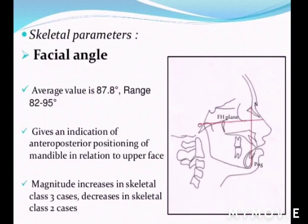Let's discuss Downs Analysis today. According to Downs Analysis, there are 5 skeletal parameters and 5 dental parameters.